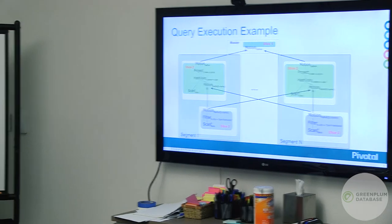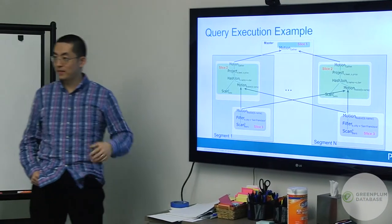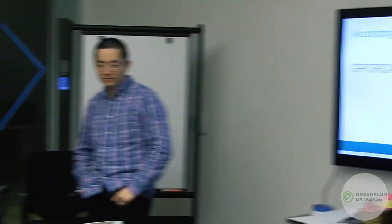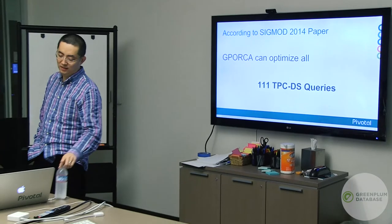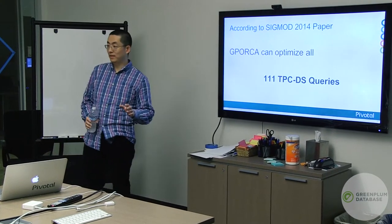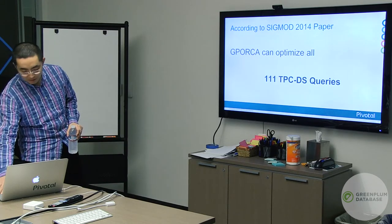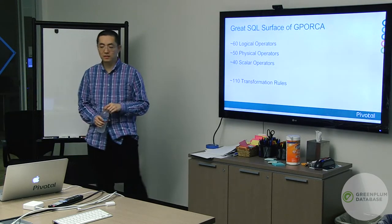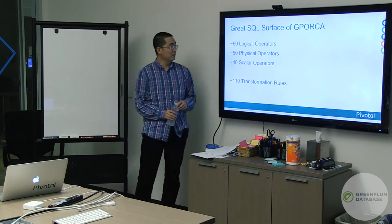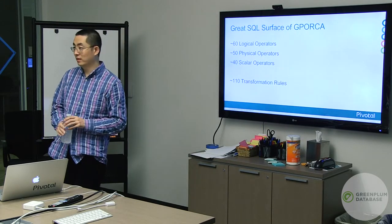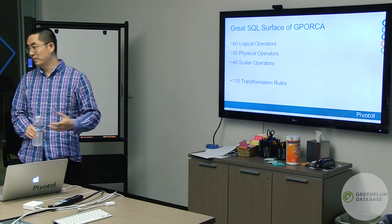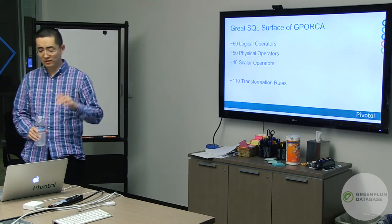The question is: how can we make sure the query optimizer is good enough to get the best plan even in such a complex cluster environment? GP-ORCA, published in SIGMOD 2014, can optimize all the TPC-DS queries — all of them. The surface area is very wide: about 90 logical operators, 50 physical operators, 40 different scalar operators, and more than 110 transformation rules to make it capable of optimizing complex data analytics queries.